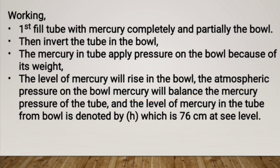The mercury in the tube applies pressure on the bowl, causing the level to rise. When atmospheric pressure is less, the mercury in the bowl acts to balance it. This balancing causes the mercury to settle at a certain level, and the height is measured — approximately 13 cm.